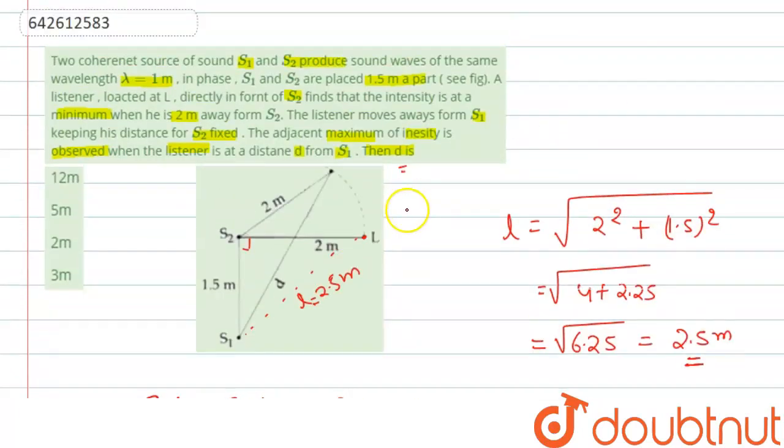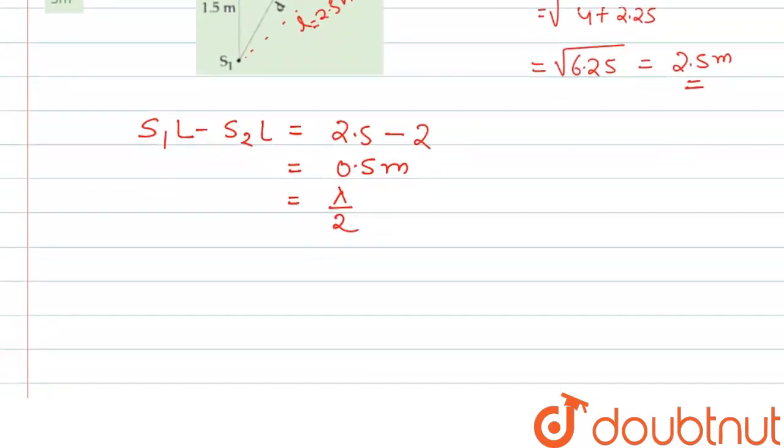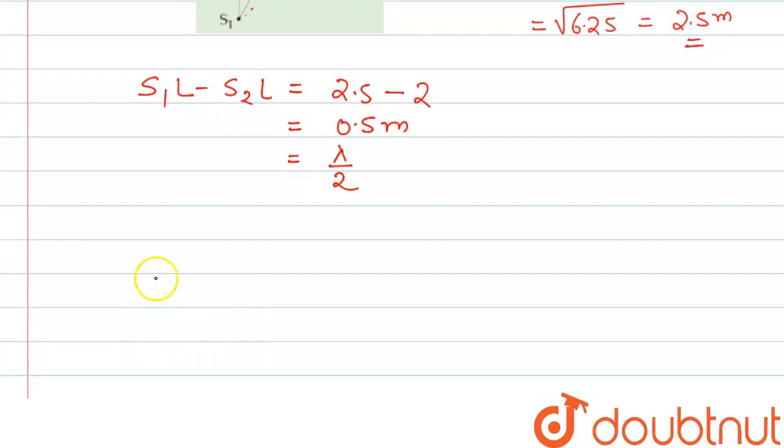Now the listener is moving, fixing the distance from S2. Now we have to find this distance. For this, we can write the path difference as S1L minus S2